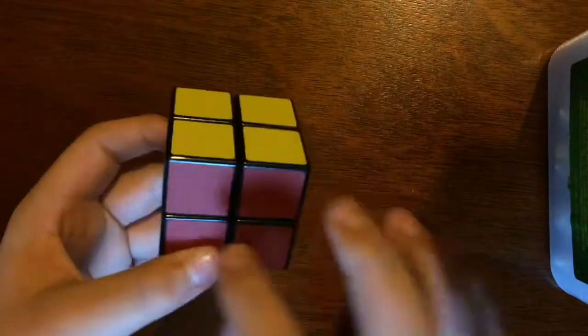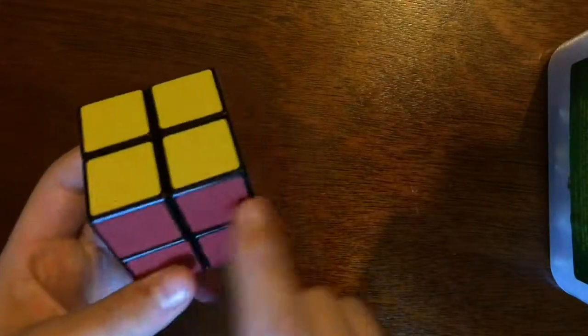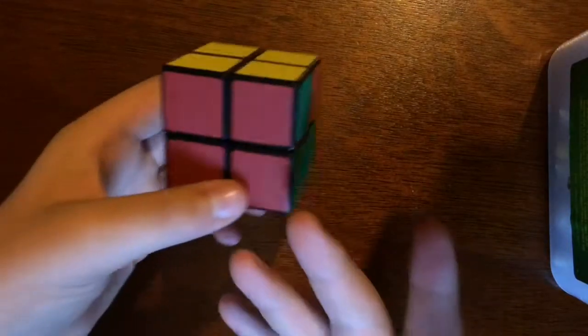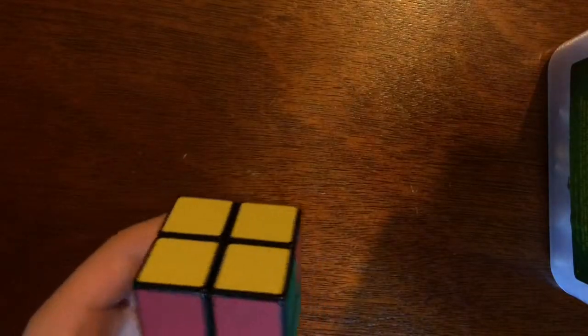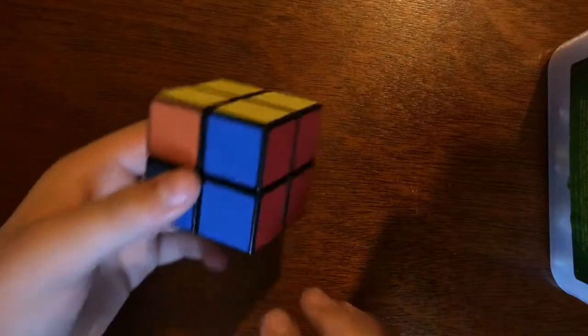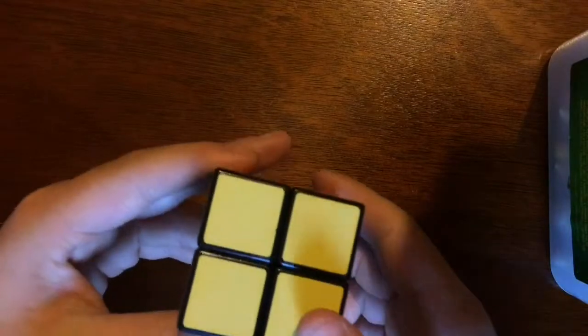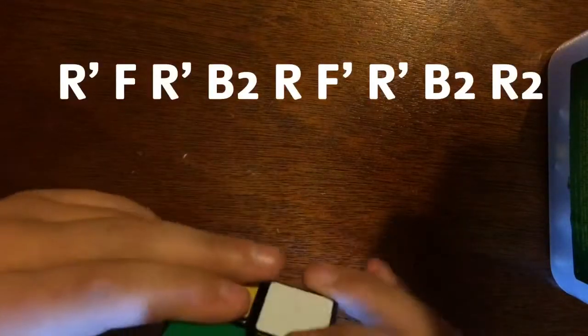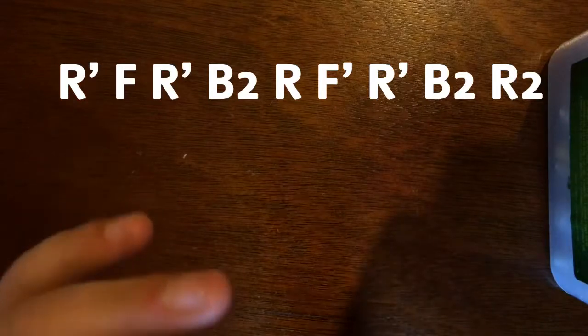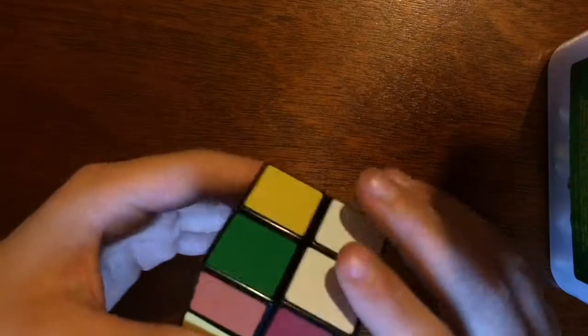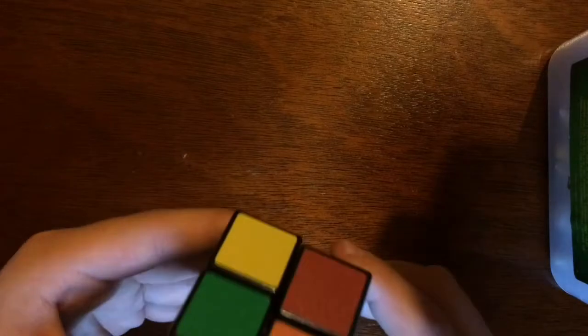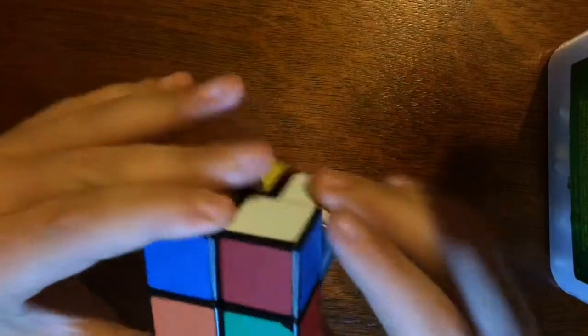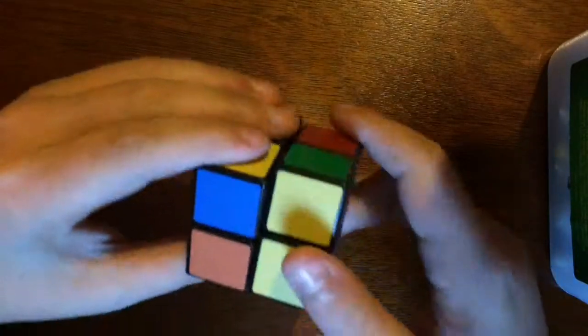Now, sometimes you won't have two pieces matched up on the middle too. But we're lucky enough to have it. And if that doesn't happen, do the algorithm I'm about to do right now. And it doesn't matter which way you're facing. But if you have them, face them away and do the side algorithm, which is right inverted, front, right inverted, back two, sorry, right, front inverted, right inverted, back two, and right two.